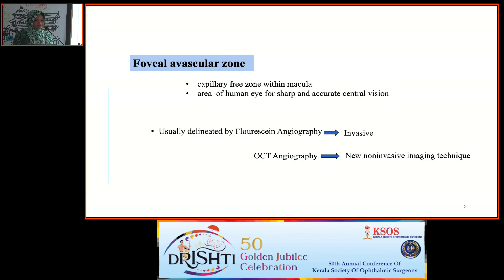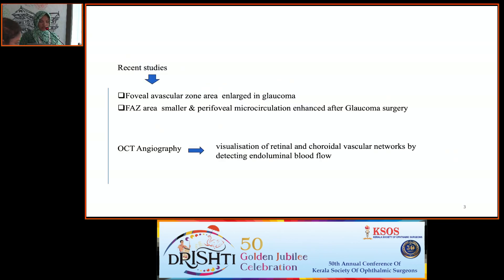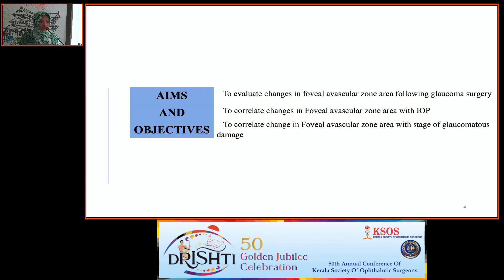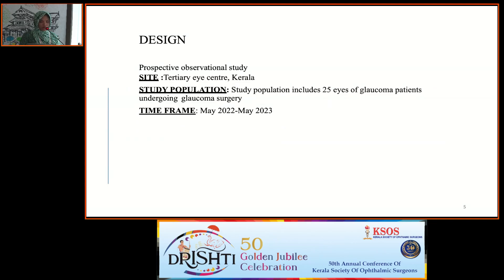The foveal avascular zone (FAZ) is the capillary-free zone within the macular area of the human eye, responsible for sharp and accurate central vision. It is usually delineated by fluorescein angiography, which is invasive. OCT angiography is a new non-invasive imaging technique. Recent studies have shown that FAZ area is enlarged in glaucoma, and is smaller with enhanced peripheral microcirculation after glaucoma surgery. The aims were to evaluate FAZ area changes following glaucoma surgery and correlate them with IOP and stage of glaucomatous damage.